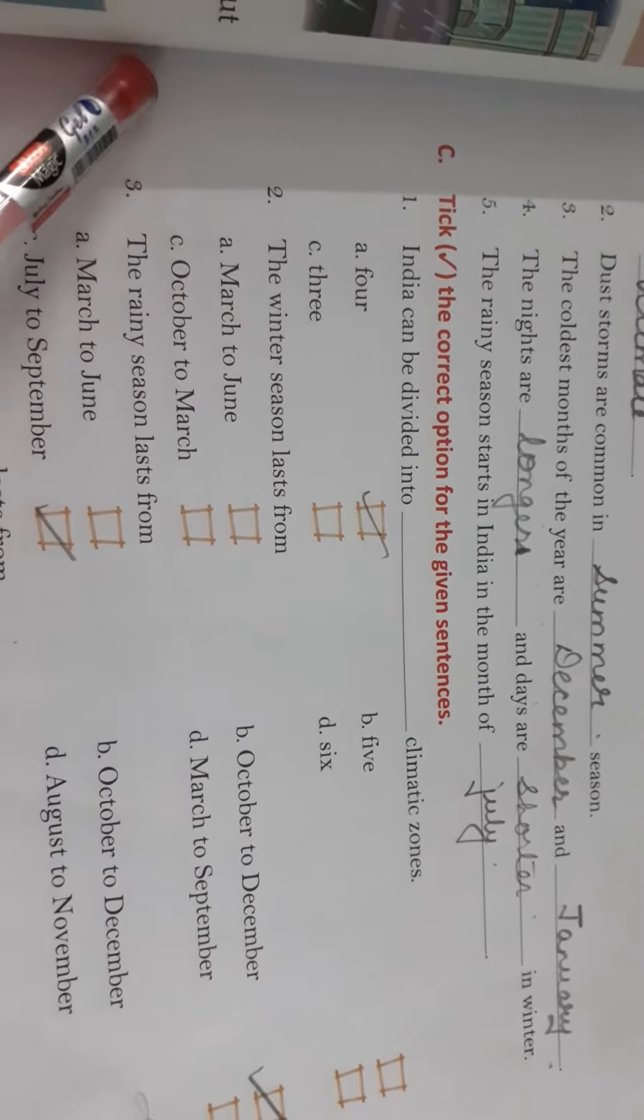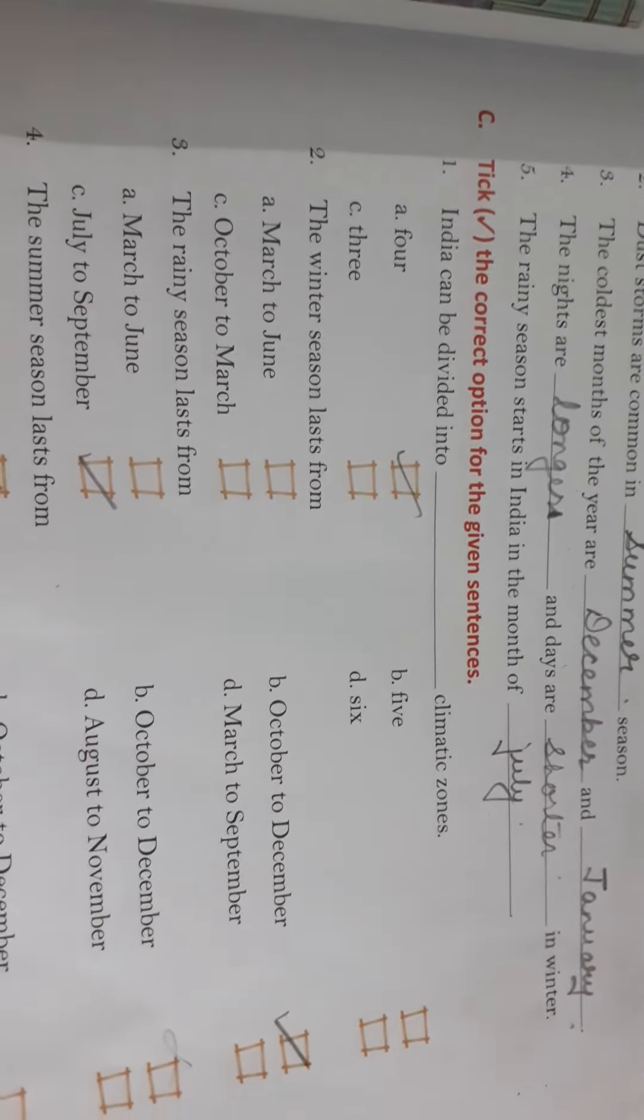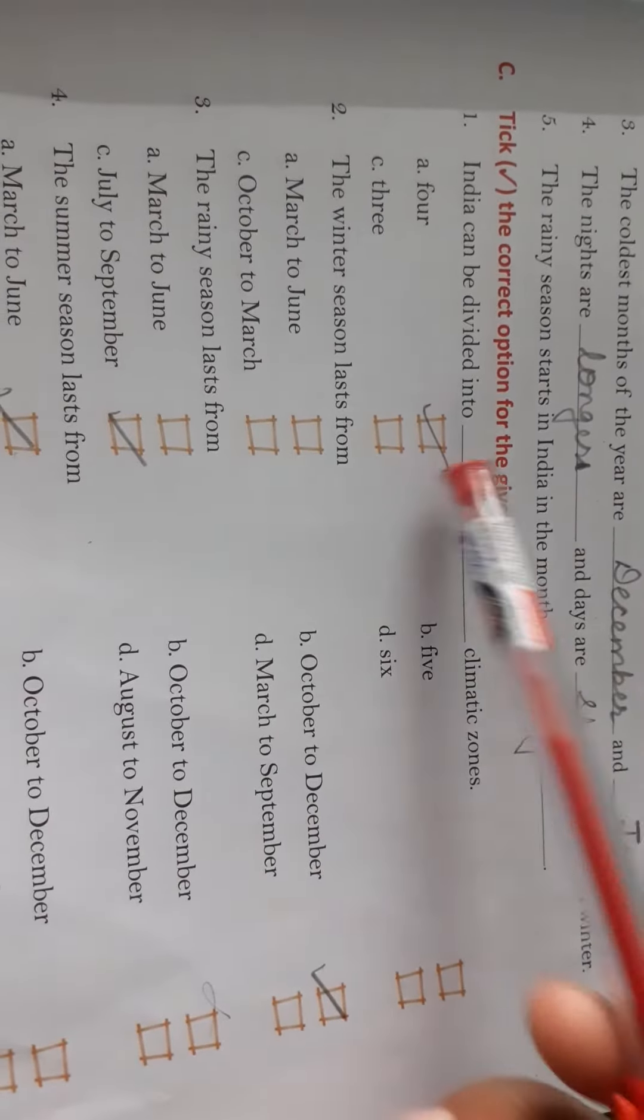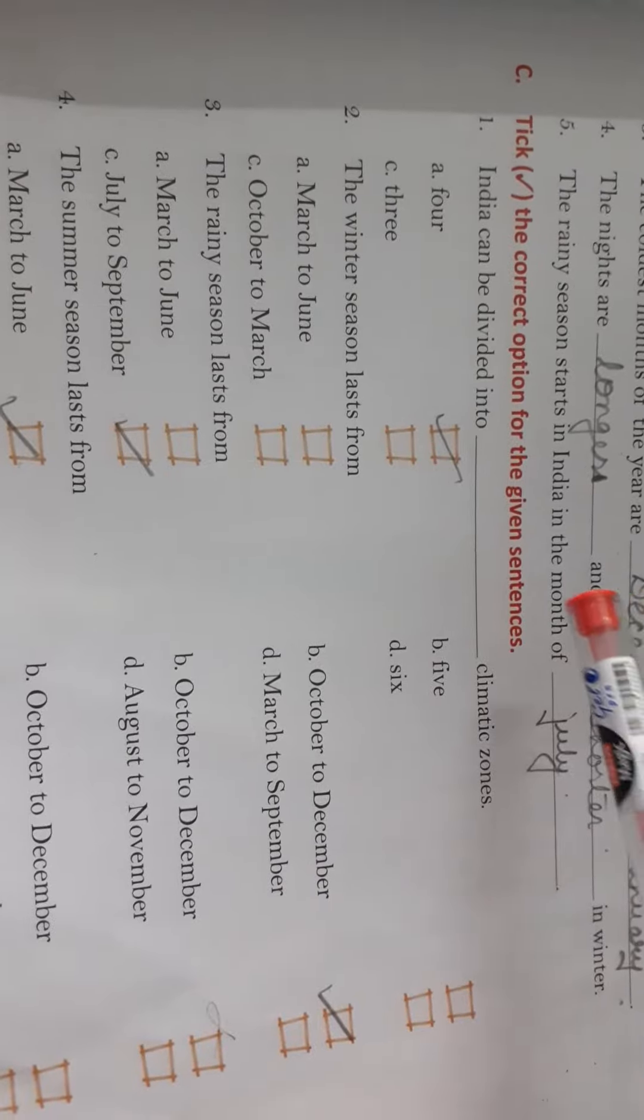India can be divided into dash climatic zone 4, 5, 3, 6. Correct answer is 4.